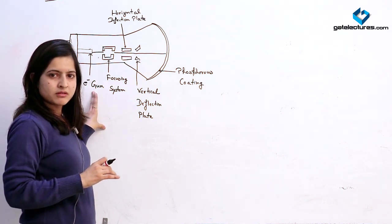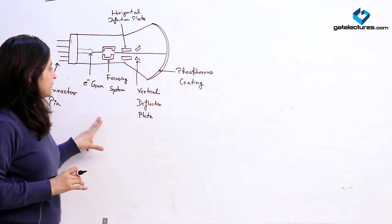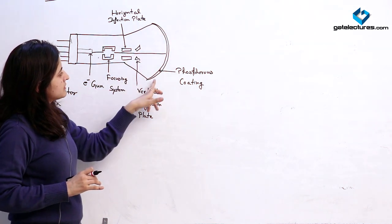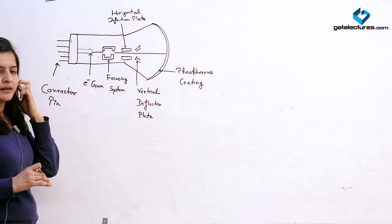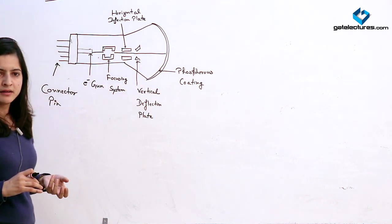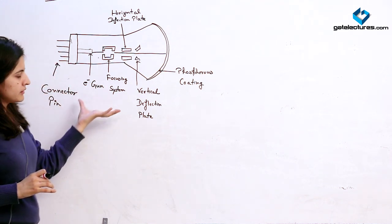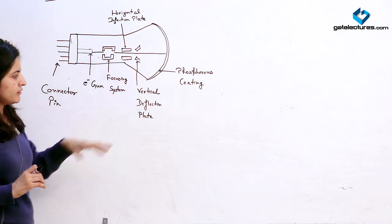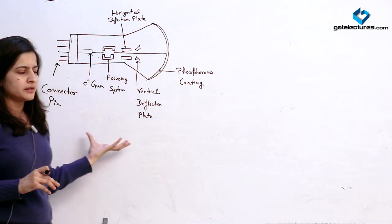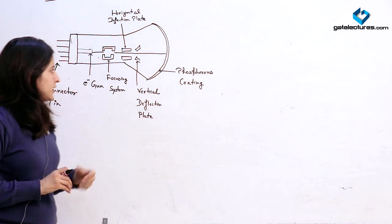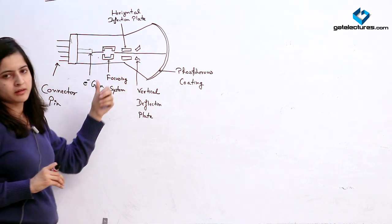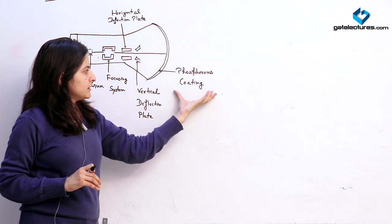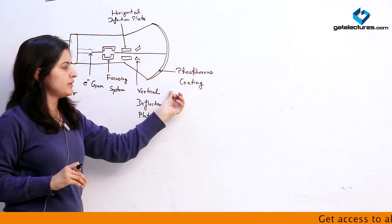The electron gun emits electrons which are plotted on the screen. These electrons emitted from the electron gun will touch the phosphorous-coated screen, and after striking on this screen they will generate light, which forms the object or picture. We can control the speed of these electrons with the help of a focusing system and horizontal and vertical deflection plates. These plates determine on which part of the screen we want our picture or image, and the focusing system focuses the electron gun on the screen. The screen is coated with phosphorous so that when the electrons strike it, they emit light.